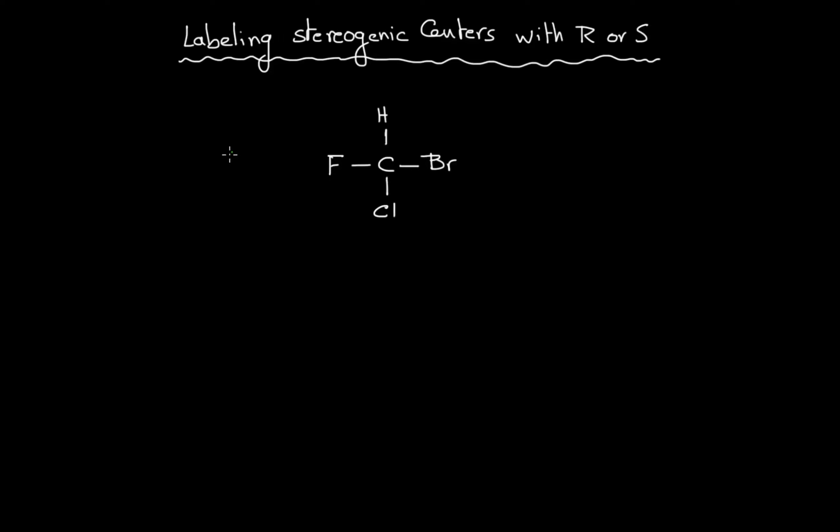Hi, this is Dr. Hayek, and in this video we'll be talking about labeling stereogenic centers with R or S. Since enantiomers are two different compounds, they need to be distinguished by names. This is done by adding the prefix R or S to the IUPAC name of the enantiomer.